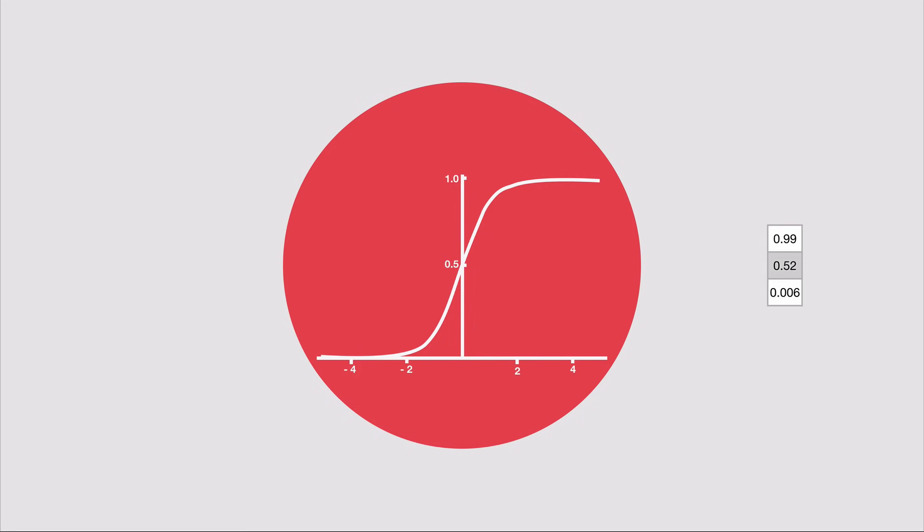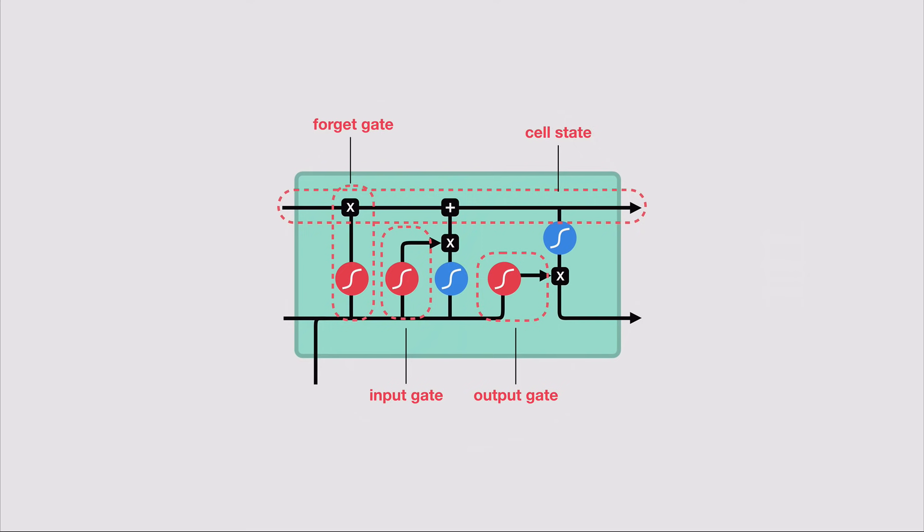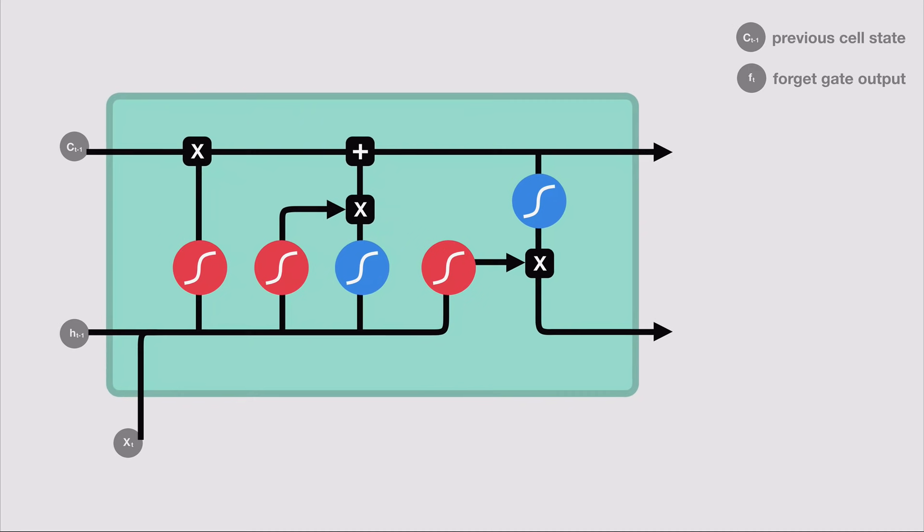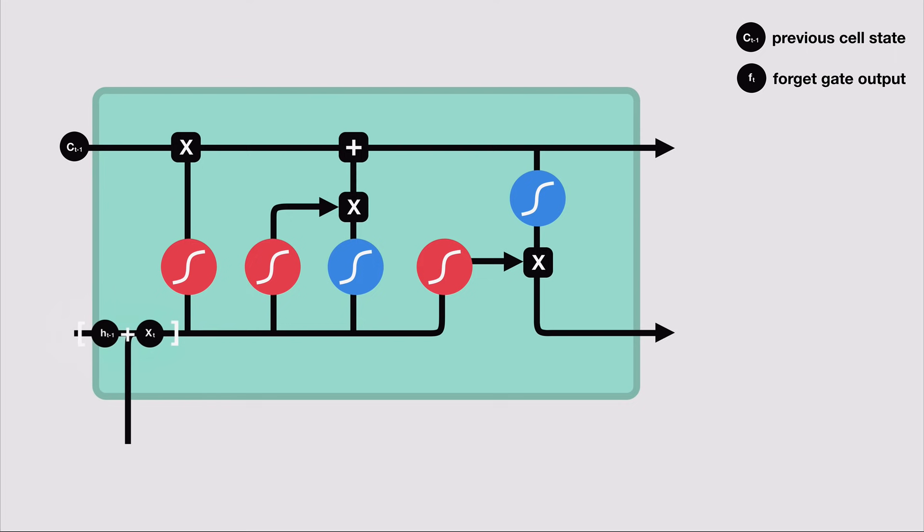Let's dig a little deeper into what the various gates are doing. We have three different gates that regulate information flow in an LSTM: a forget gate, input gate, and output gate. First, we have the forget gate. This gate decides what information should be thrown or kept away. Information from the previous hidden state and information from the current input is passed through the sigmoid function. Values come out between zero and one. The closer to zero means to forget and the closer to one means to keep.